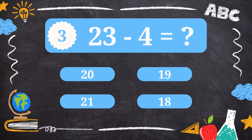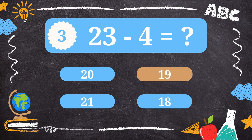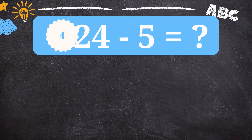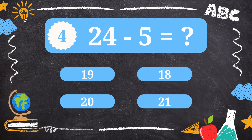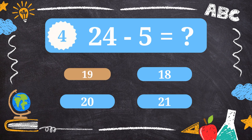Question 3. What is 23 minus 4? 19. Question 4. What is 24 minus 5? 19.